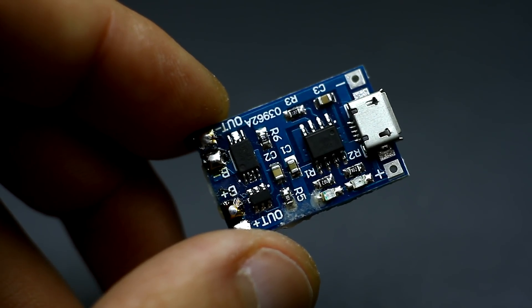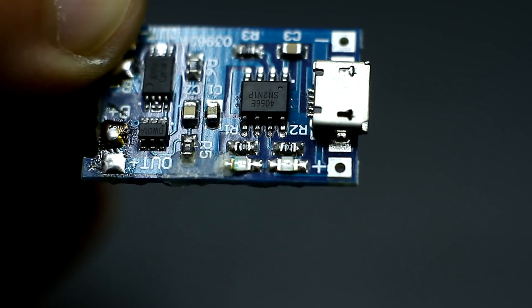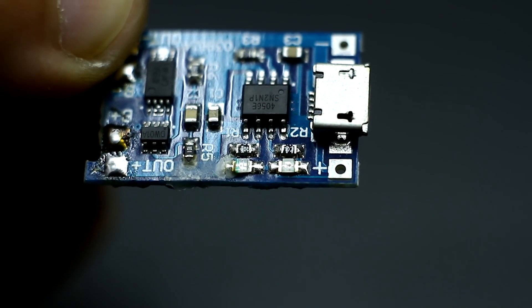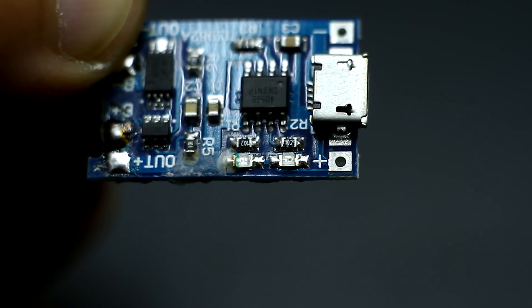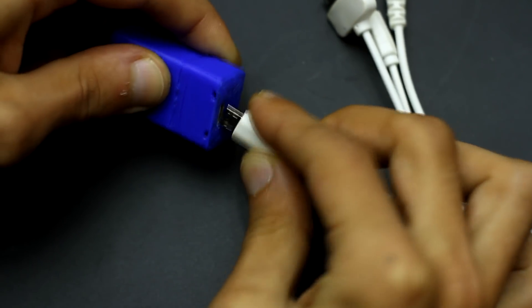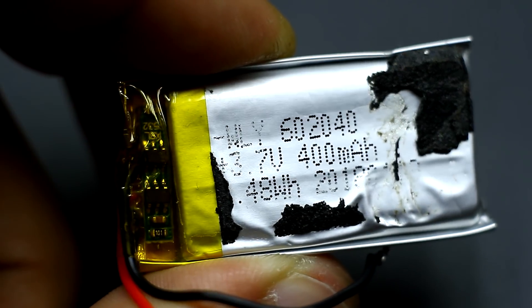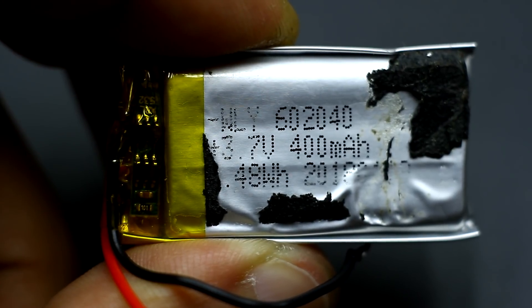The charging system is standard, built on the basis of the TP4056 chip. The board has a charge indicator and a battery protection. This model will allow you to charge the lithium battery from a normal USB port with a current of up to 1 Ah. My battery has a capacity of only 400 mAh.